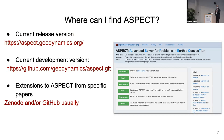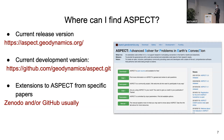If you want to use ASPECT, there are several ways to get it. You can get the release version through the CIG page itself. There's also a development version through GitHub, useful if you want to extend ASPECT yourself for things like surface processes. People who extend ASPECT sometimes release their extensions through Zenodo or GitHub as well.